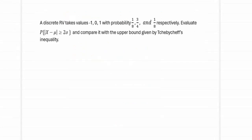The question here is: a discrete random variable takes the values minus 1, 0, and 1 with probabilities 1/8, 3/4, and 1/8 respectively. We need to evaluate the probability of |X minus μ| greater than or equal to 2σ, and compare it with the upper bound given by Chebyshev's inequality.